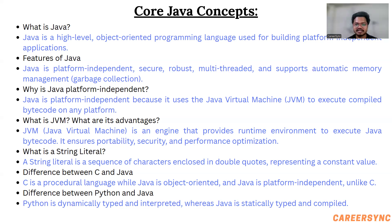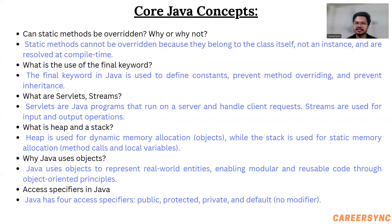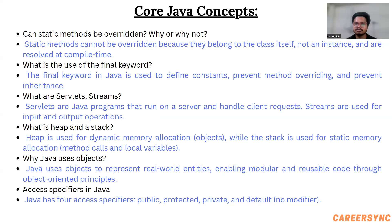What is the difference between Python and Java? Python is dynamically typed and interpreted, whereas Java is statically typed and compiled. Can static methods be overridden? Static methods cannot be overridden because they belong to the class itself, not an instance, and are resolved at compile time. What is the use of the final keyword? The final keyword in Java is used to define constants, prevent method overriding, and prevent inheritance. What are servlets and streams? Servlets are Java programs that run on a server and handle client requests. Streams are used for input and output operations.